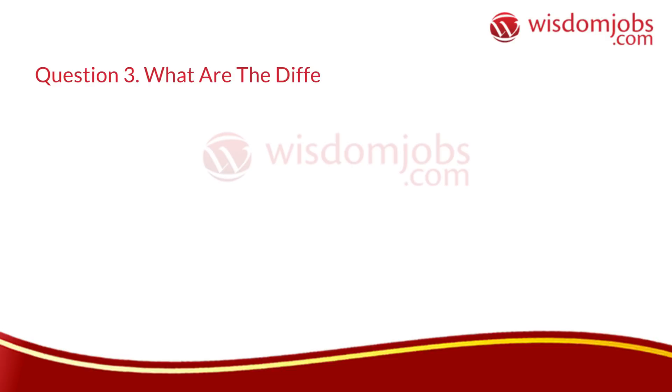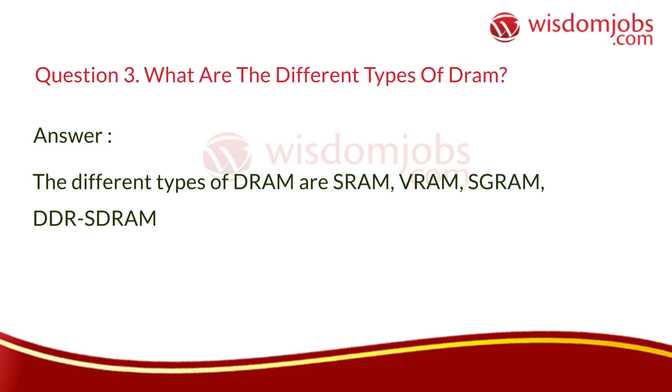Question 3: What are the different types of DRAM? Answer: The different types of DRAM are SRAM, RAM, SGRAM, and DDR-SDRAM.